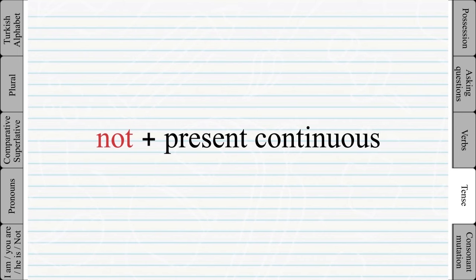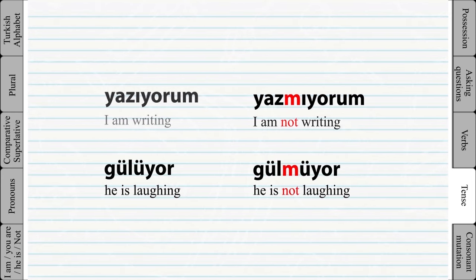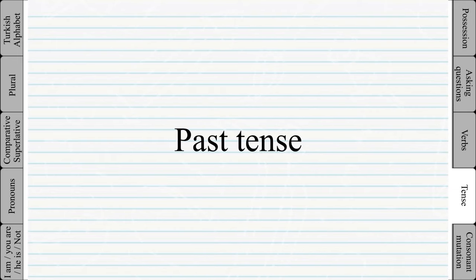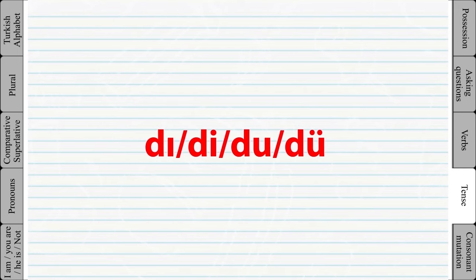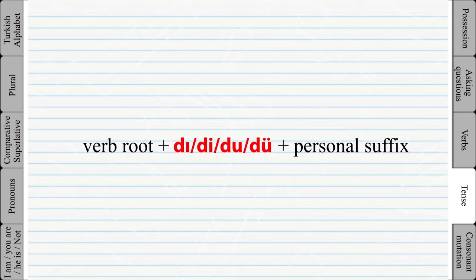To make the present continuous tense negative is super simple — you only have to add the letter 'm' after the verb root. Past tense: we learned how to add the present continuous suffix to the root of the verb. To make a verb into the past tense, we use one of four suffixes — which one to use again depends on the last vowel of the verb, just as with other suffixes.